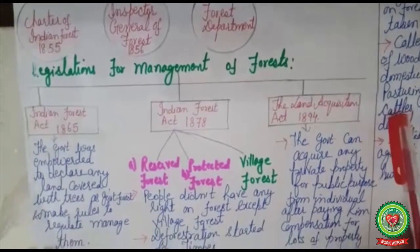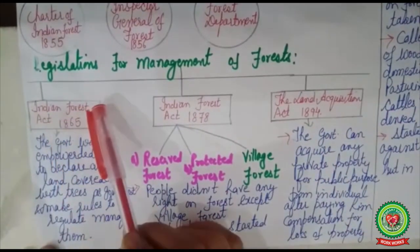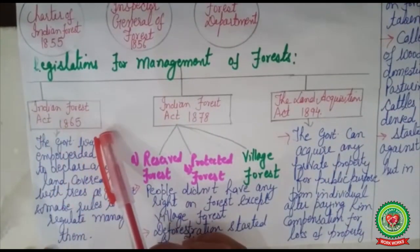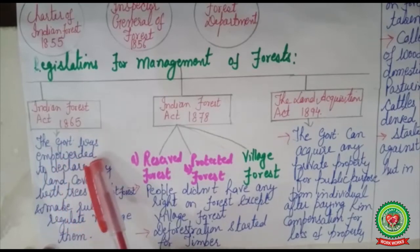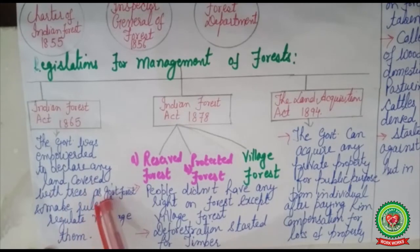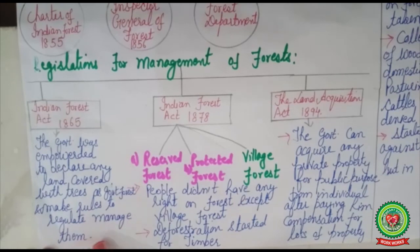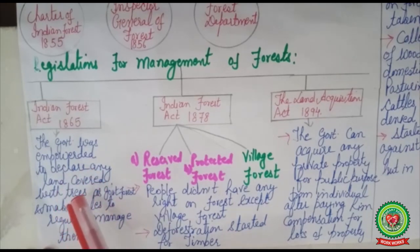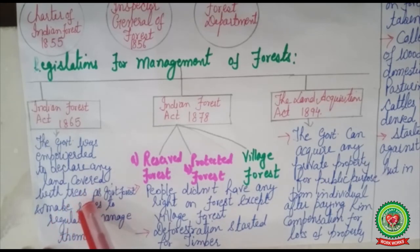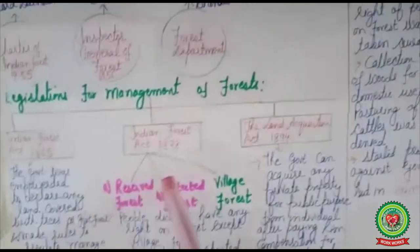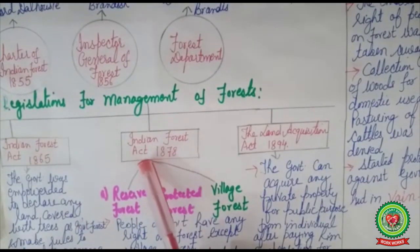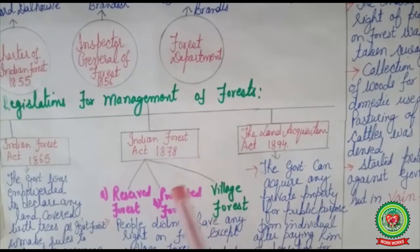The Indian Forest Act of 1865 empowered the government to declare any land covered with trees as government forest and make rules to regulate and manage them. That means if the government saw trees anywhere, it could declare that land a government forest and make rules to regulate it. Then the Indian Forest Act of 1878 was passed.